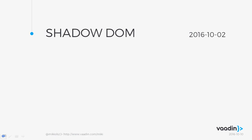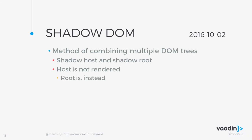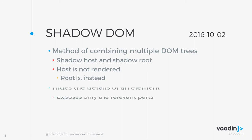Shadow DOM is a technique to hide certain parts of the DOM. It combines multiple DOM trees — we have a DOM tree defined by our custom element and a DOM tree that is our document displaying that element. It uses concepts of a shadow host and a shadow root. The shadow root is the root of our element, the shadow host is what we place in the document. When the browser renders, it renders the shadow root rather than the host. This hides element details and exposes only the relevant part — like defining an interface in Java, a public API for a custom element.